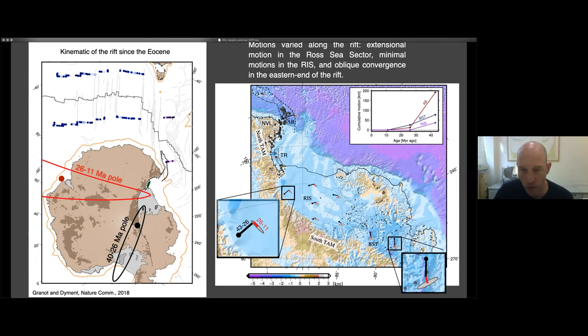We can use these rotation poles to predict the deformation pattern, the relative plate motion across the rift system. The fact that the rotation poles have been located close to the center of the rift system means that the Ross Sea sector has been governed by extensional motion. While the center part of the rift system had almost no extensional motion, but some strike-slip motion. And the other side of the rift system had mostly oblique convergence motion.